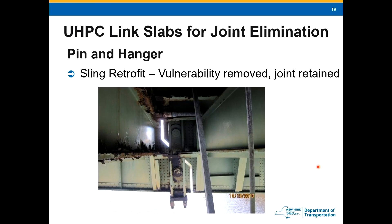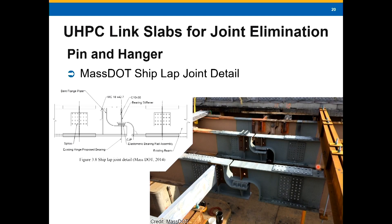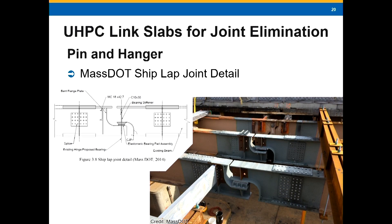What we would typically do is a sling retrofit — a catch system — which removes the vulnerability, but you still have a joint and have to deal with maintenance and deterioration. One way to mitigate all that is a detail we got from our neighbors in Massachusetts, called a shiplap detail. You go in, remove the pin and hanger, cut the ends of the girder off, splice in some dapped girder ends, and create a bridge seat — this would work well with a link slab. Something we haven't done yet, but we're considering it on a current project.